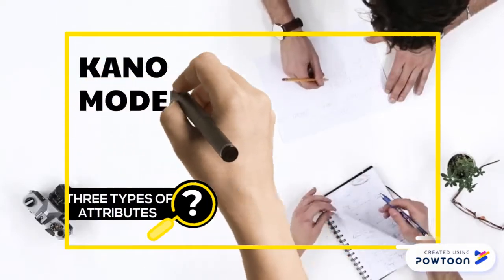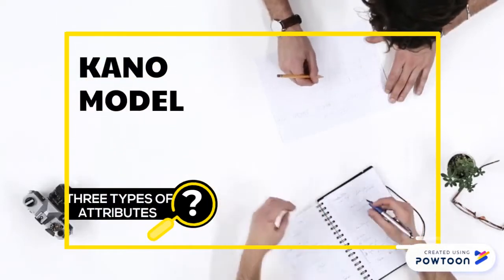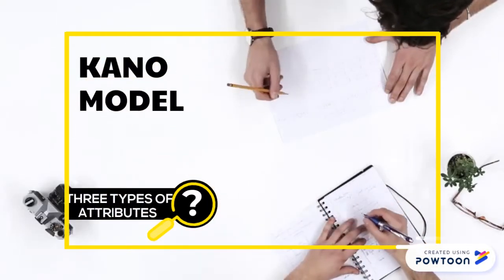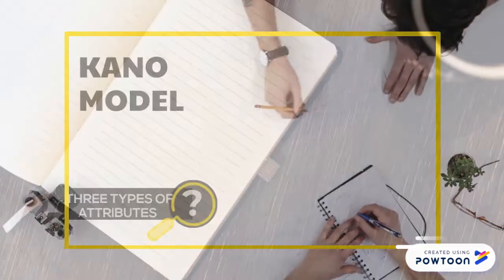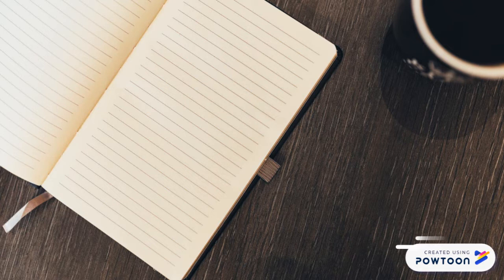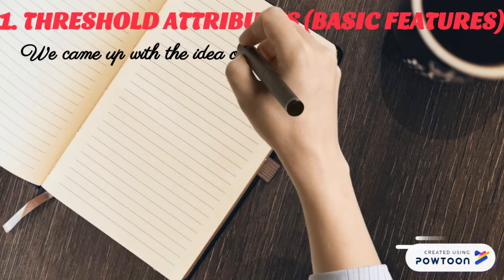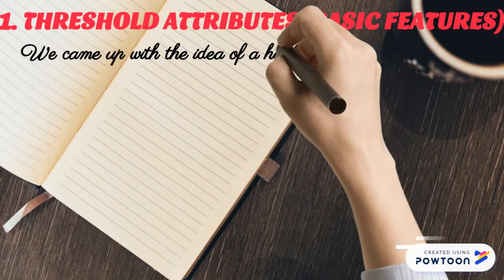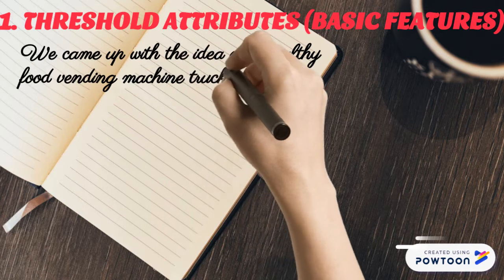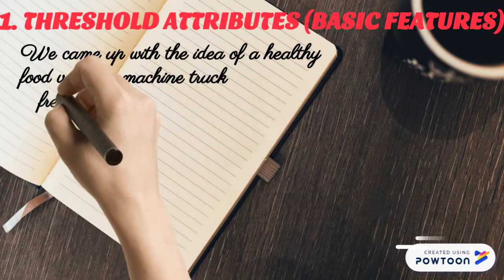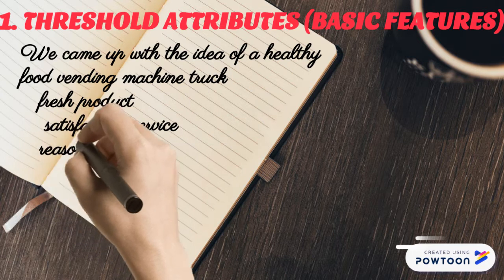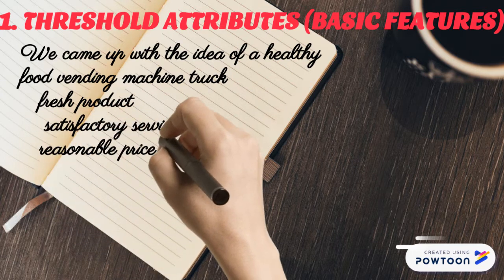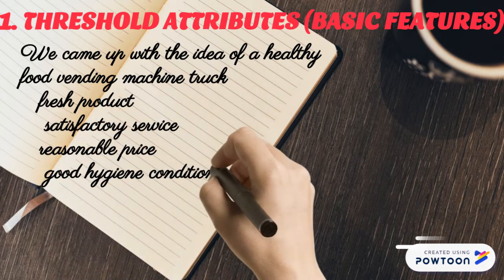The last tool is called the Kano Model. This is a list of three types of attributes to products. The first attribute is the Must-Have Attribute. These are the basic features that customers expect a product or service to have. It helps us to come up with an idea of a healthy food-finding machine truck with fed product, satisfactory service, and good hygiene condition.